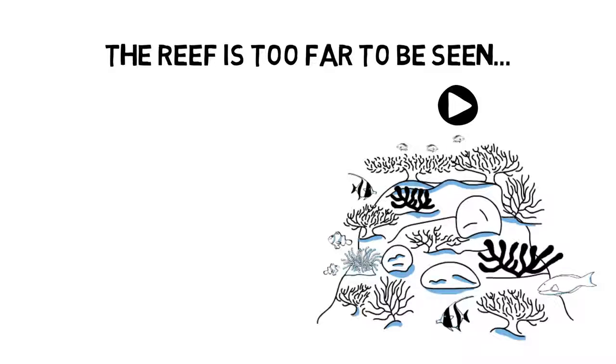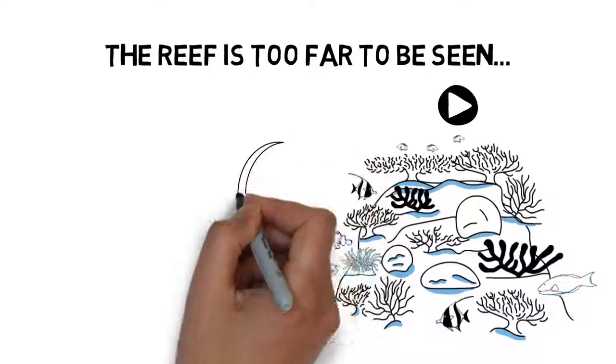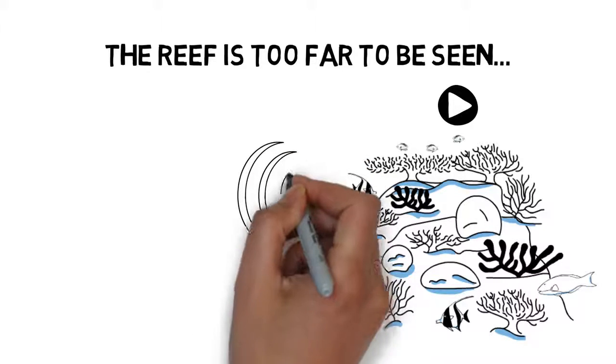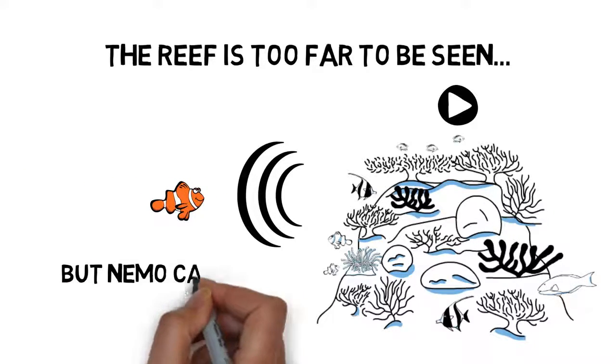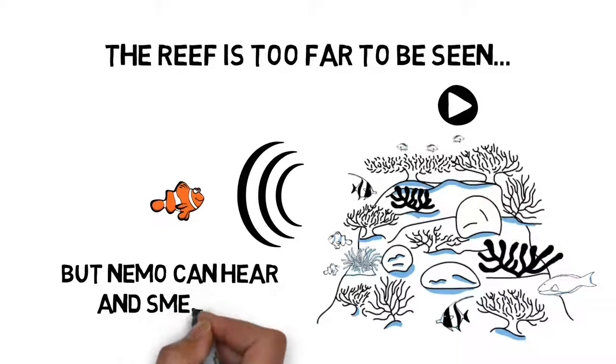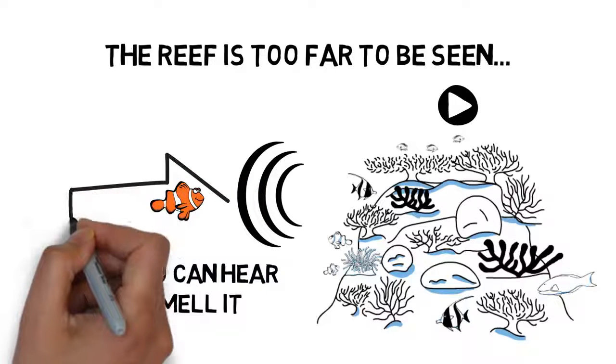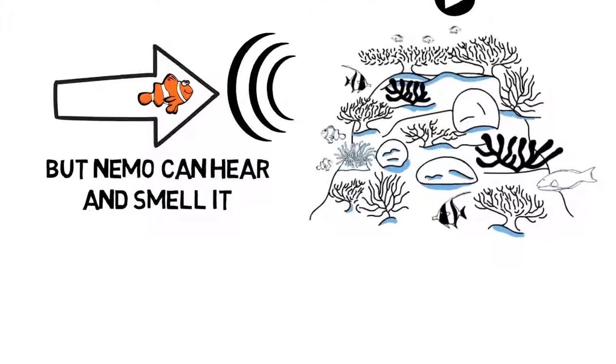That was the sound of the reef where Nemo wants to go. Nemo is smart and knows that if he keeps swimming towards the sound he will eventually reach the reef. And as Nemo gets closer he also notices the typical smell of the reef. Another important cue that Nemo is on the right path.